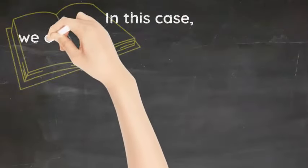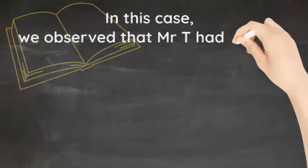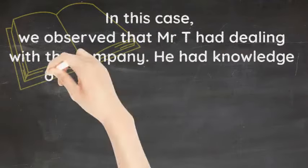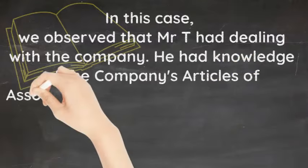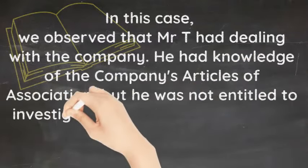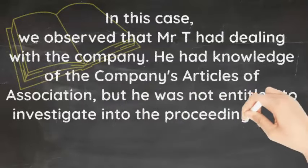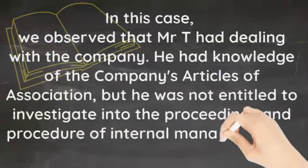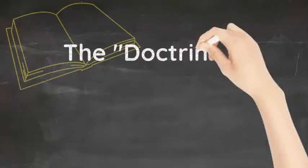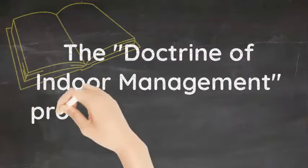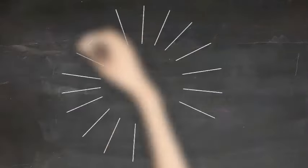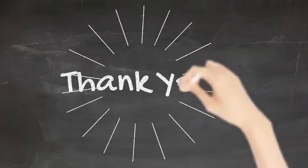So in this case, we observed that Mr. T had a dealing with the company. He had knowledge of the company's articles of association, but he was not entitled to investigate into the proceedings and procedure of the internal management of the company. The doctrine of indoor management protects outsiders against the company. That's all for today. Thank you very much for watching.